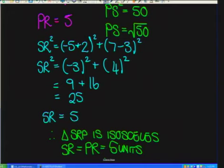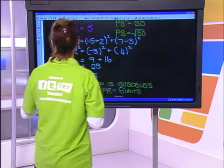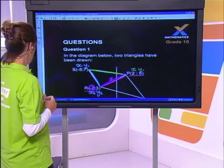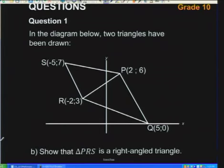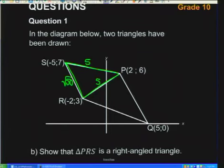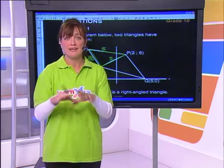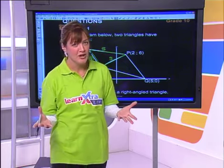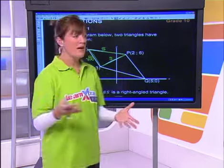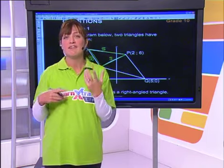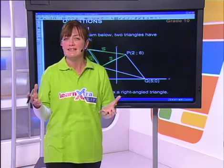Next question using the same diagram: show that triangle PRS is right-angled. Since we've already found all three side lengths using the distance formula, we can apply the theorem of Pythagoras. If SR = 5, RP = 5, and SP = √50, and if the angle at R is 90°, then SP² should equal SR² + RP². Let's verify: (√50)² = 5² + 5² → 50 = 25 + 25.